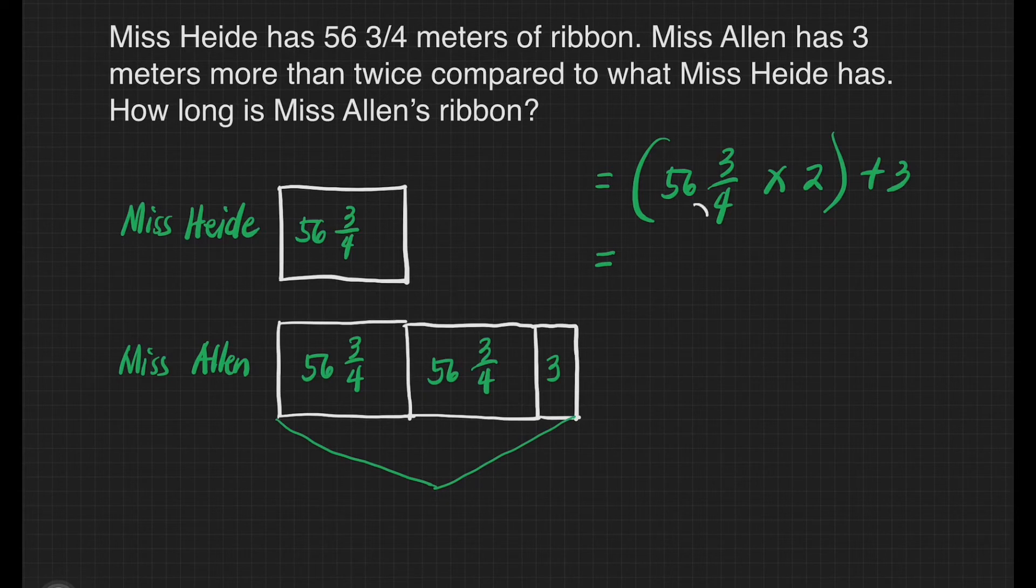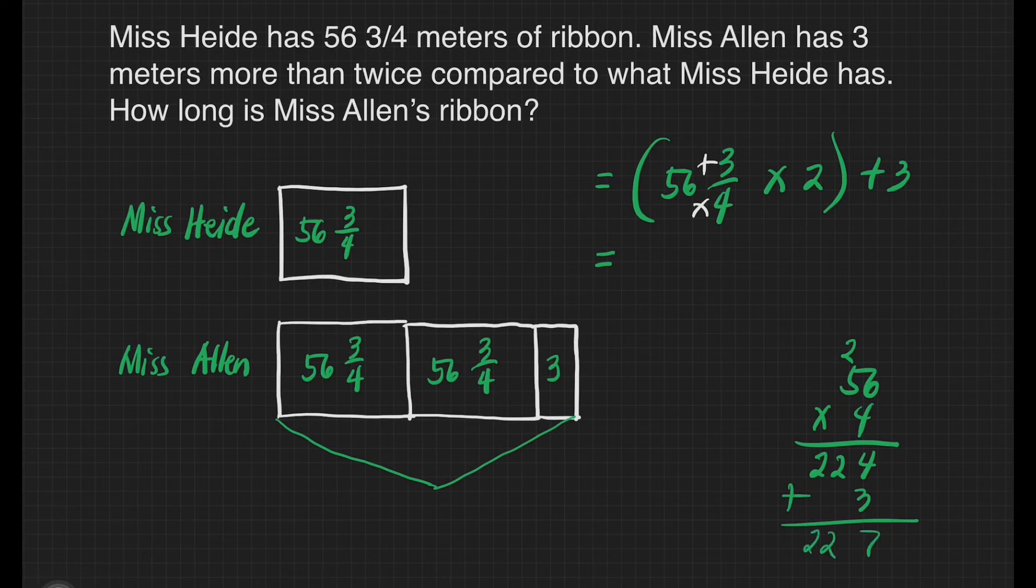56 times 4 plus 3. Let's perform that. 56 times 4, that's 6 times 4 is equal to 24. Write 4 right to the top of 5. 5 times 4 is 20 plus 2, it's 22. Then we add 3 plus 3 because we have the numerator there. That's going to be 227. Then copy our denominator which is 4 times 2 over 1.